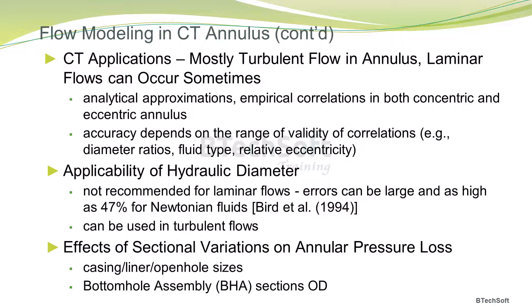Here's a quick note on the applicability of the hydraulic diameter, which is commonly used for annular flows. The hydraulic diameter is not recommended for laminar flows — errors can be large, as high as 47% for Newtonian fluids. However, it can be used in turbulent flows, which is mostly the case for coil tubing applications. It's also important to consider the effects of sectional variations resulting from different casing, liner, or open hole sizes on the annular pressure losses. These sectional variations can also occur due to variations in the BHA section geometry.